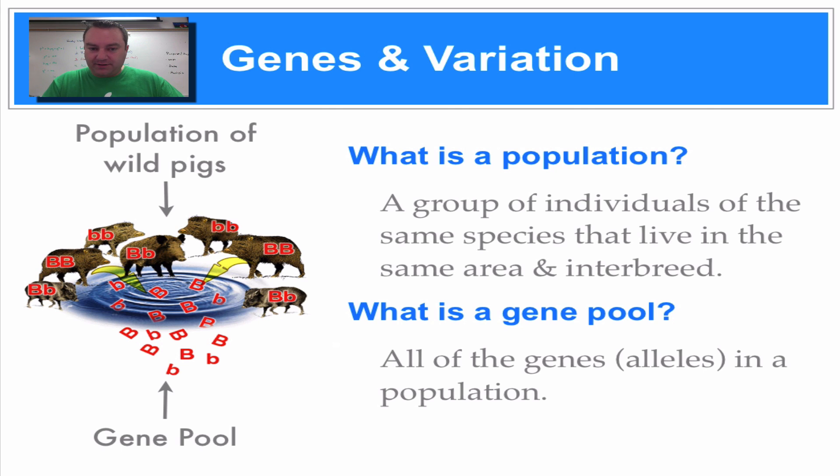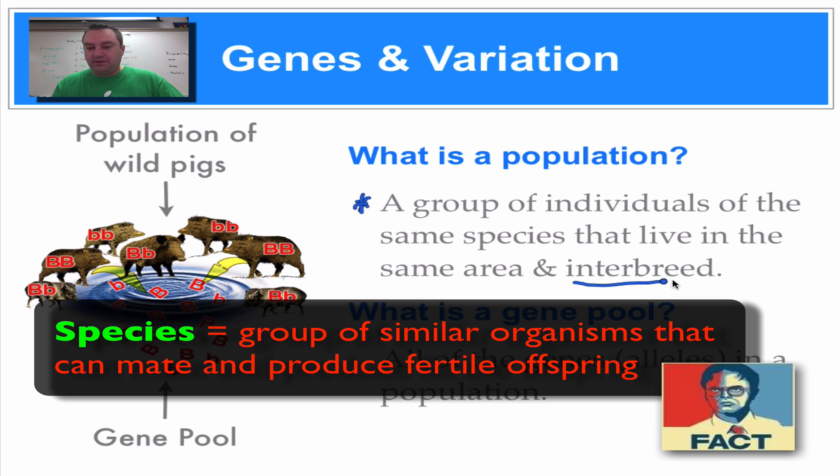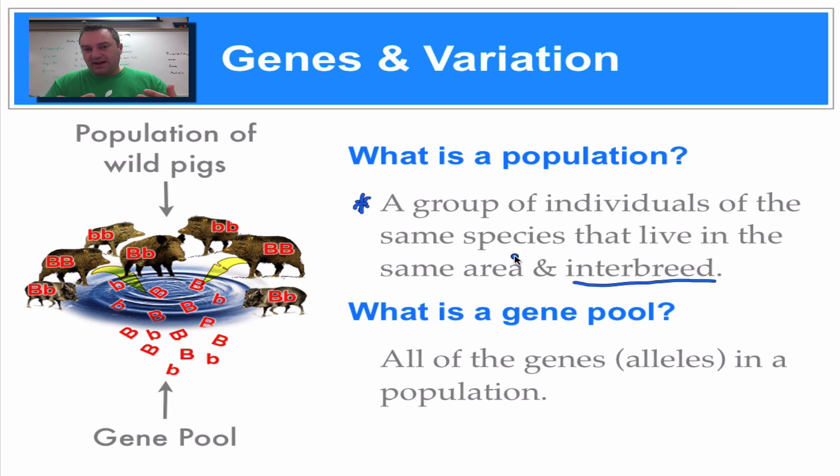All right. So how do we define population? Because essentially what we're doing in chapter 17 is we're looking at population genetics. So what do we mean by a population? A population is essentially a group of individuals of the same species that live in the same area and they interbreed. A species is defined as a group of similar individuals that can mate and produce fertile offspring. So they got to be able to breed and make their own offspring so that they can continue the species. That's why that's important.